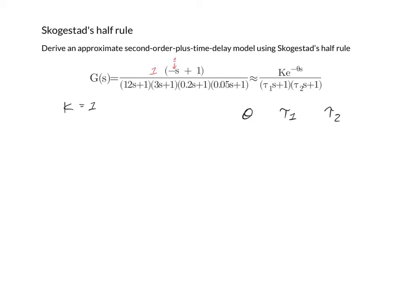Also notice that in this transfer function there is no dead time. So we can start our table showing zero time delay and using 12 and 3 for our initial values for the first two time constants.